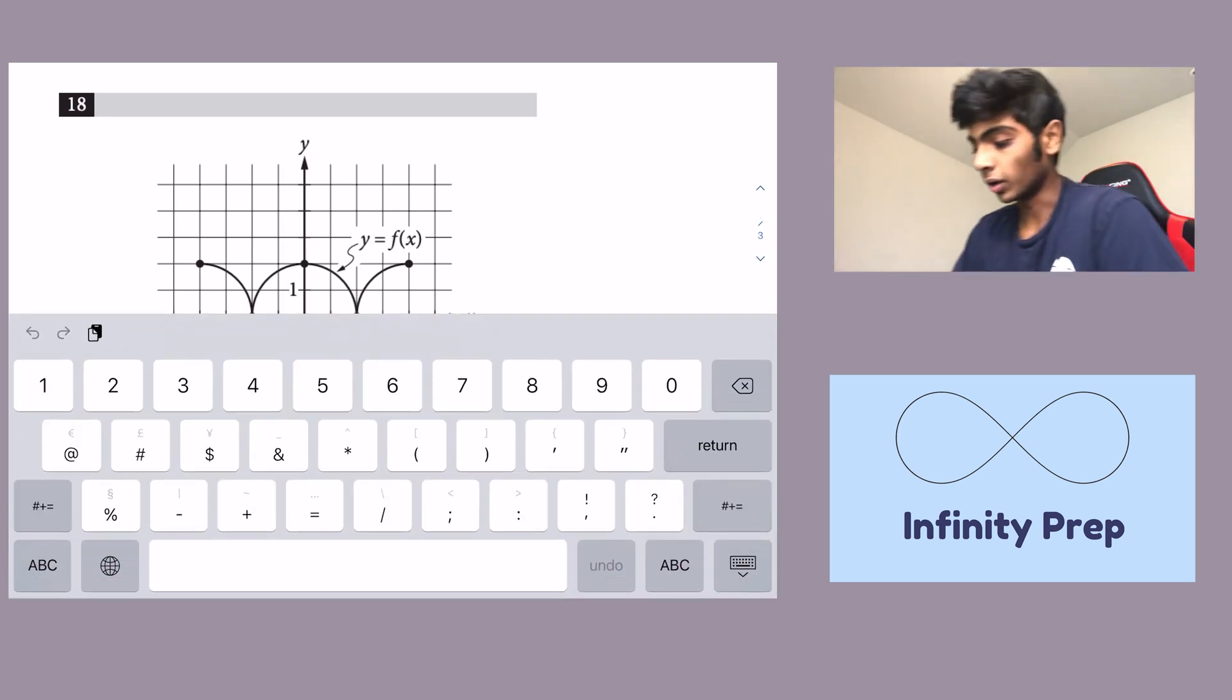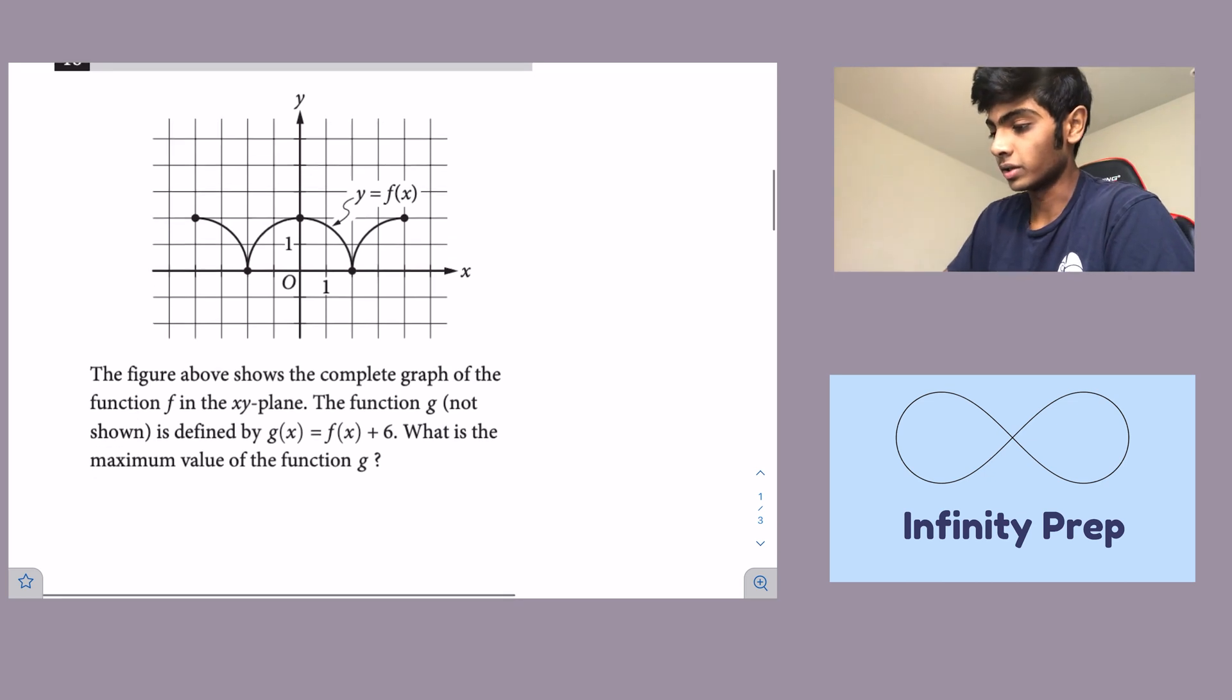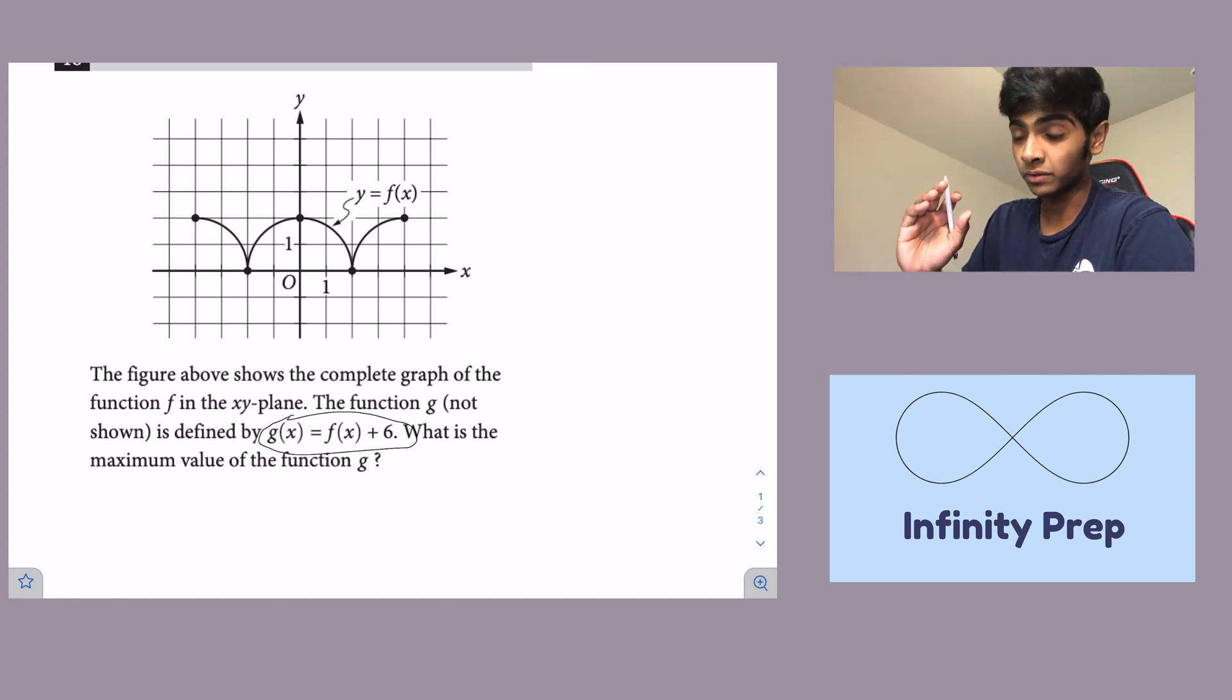Okay, so really all we have to do to get this one is understand that if g(x) is f(x) plus 6, then we know that it's going to be the same as f(x) except it's going to be moved up 6.